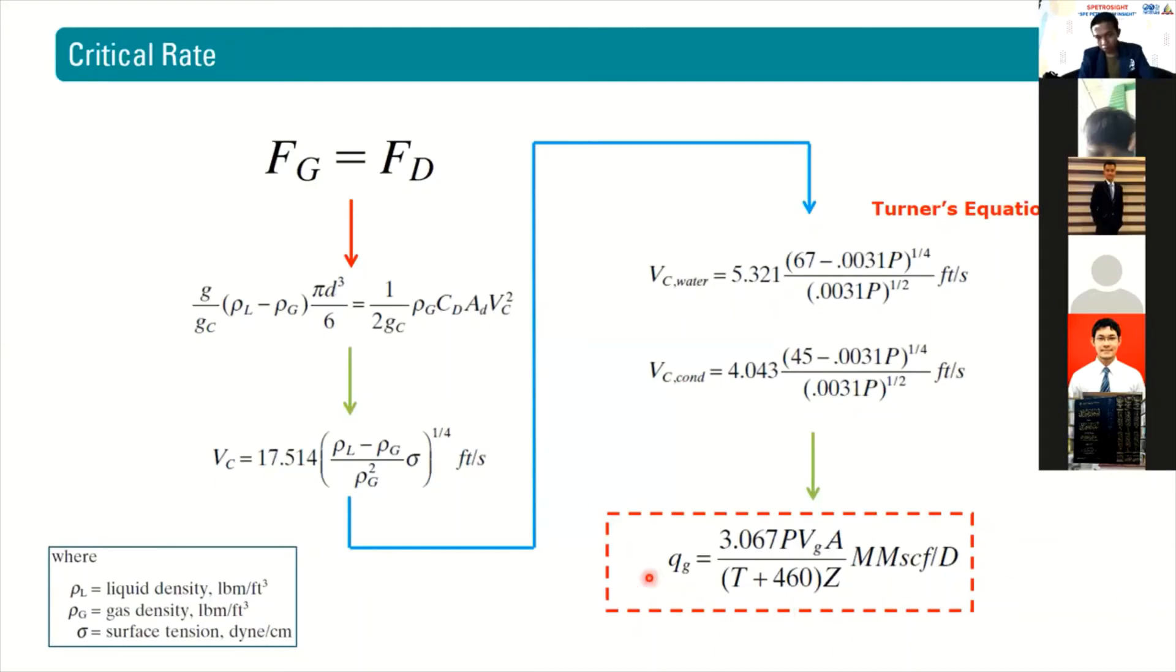You can see it's quite easy. If you want to calculate the critical flow rate, you need to know the pressure, the area of the tubing, the temperature, and the Z factor.